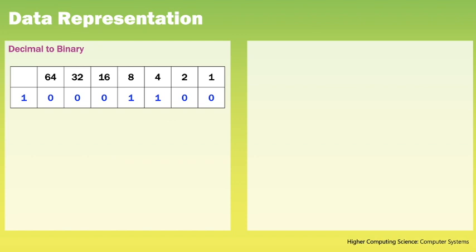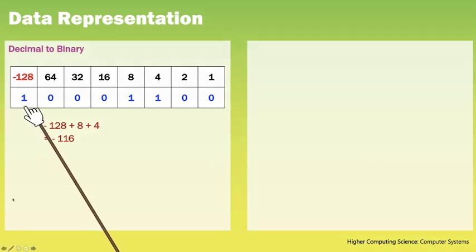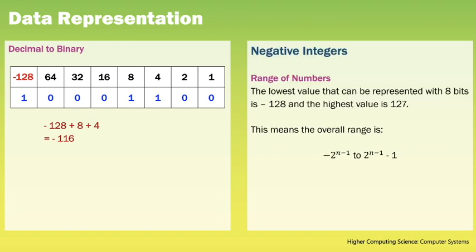That's the process of converting a negative integer to binary using 2's complement. For the reverse — converting a binary number to find its negative value — we look at the number 10001100. We start with minus 128 and add the other values, so minus 128 plus 8 plus 4 gives us minus 116. With 2's complement the first bit will always be 1, indicating a negative number. Using 8 bits with 2's complement, the range is minus 128 to positive 127.